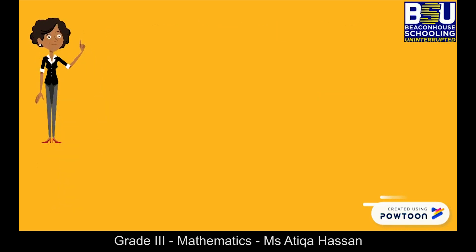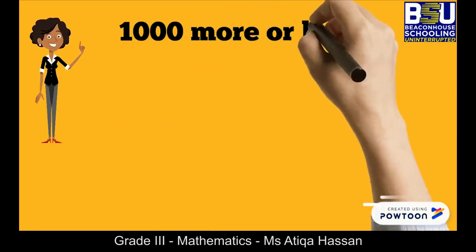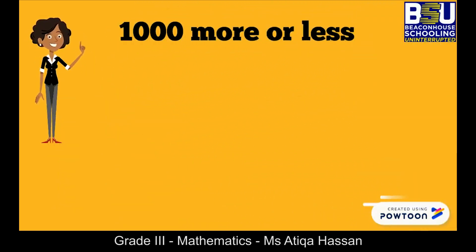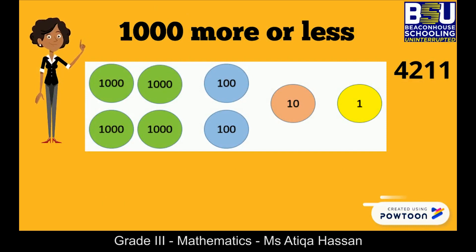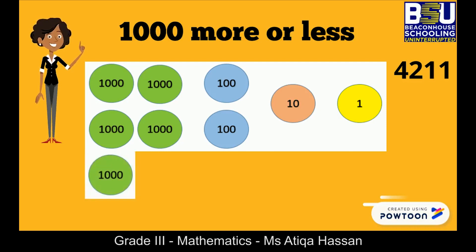Now we will discuss what is 1000 more or less. The place value counter represents the number 4211. Imagine adding another green counter — 1000 more than this number is 5211.